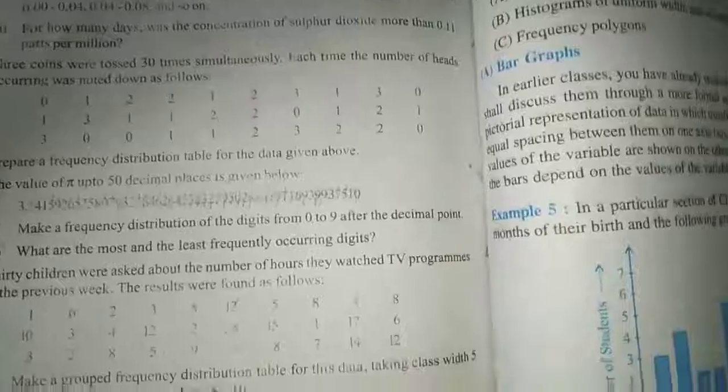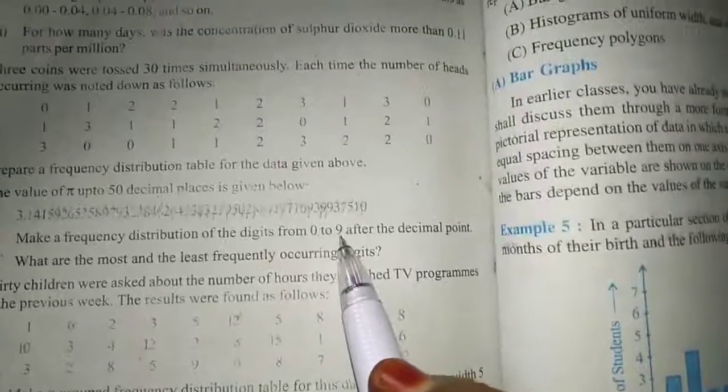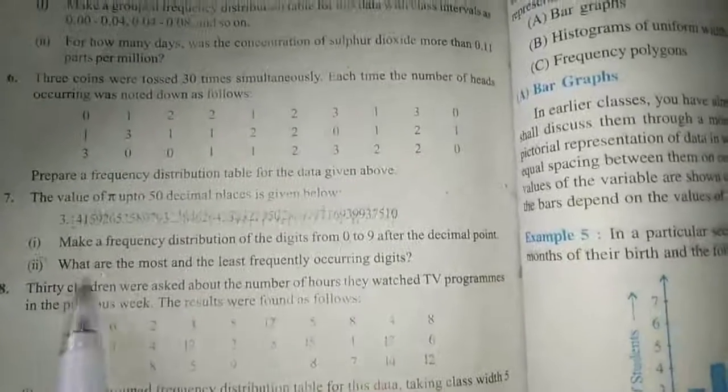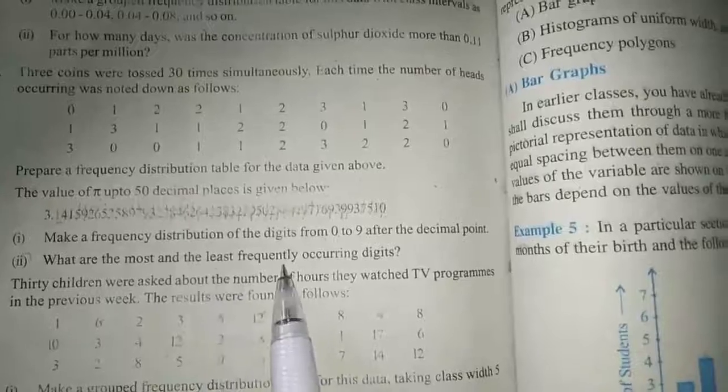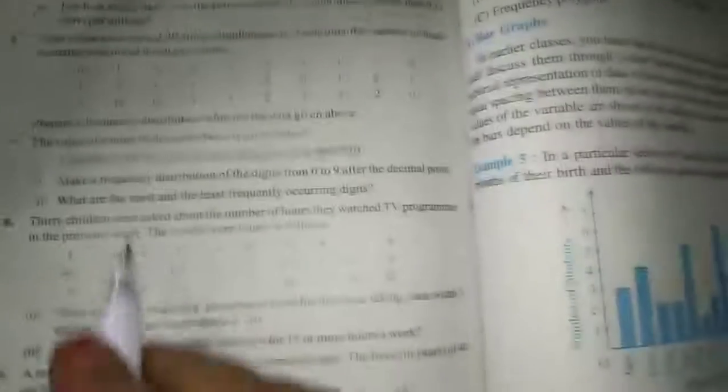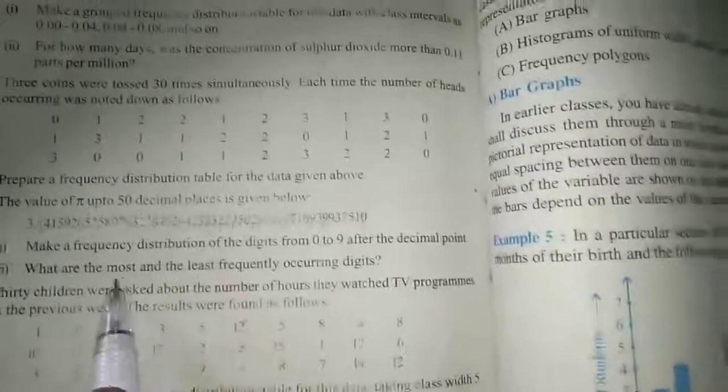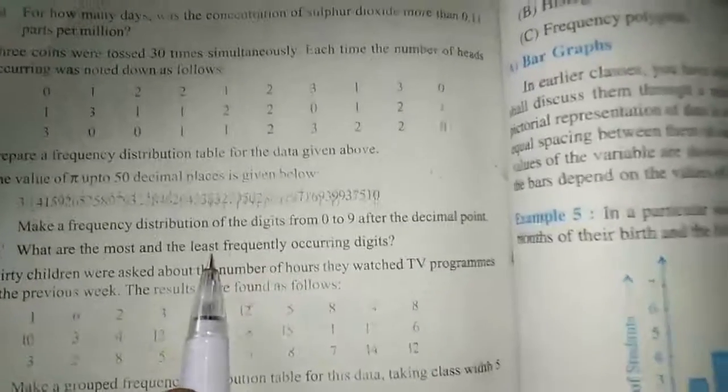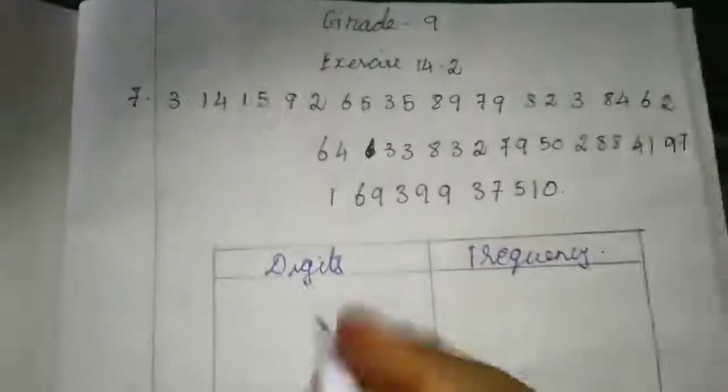So the frequencies will be 0, 1, 2, 3 up to 9 that come after the decimal point. What are the most and the least frequency acquiring digits? Most times repeated, least times repeated. Now I am going to make a frequency distribution table. I wrote the digits here, first digit is what?